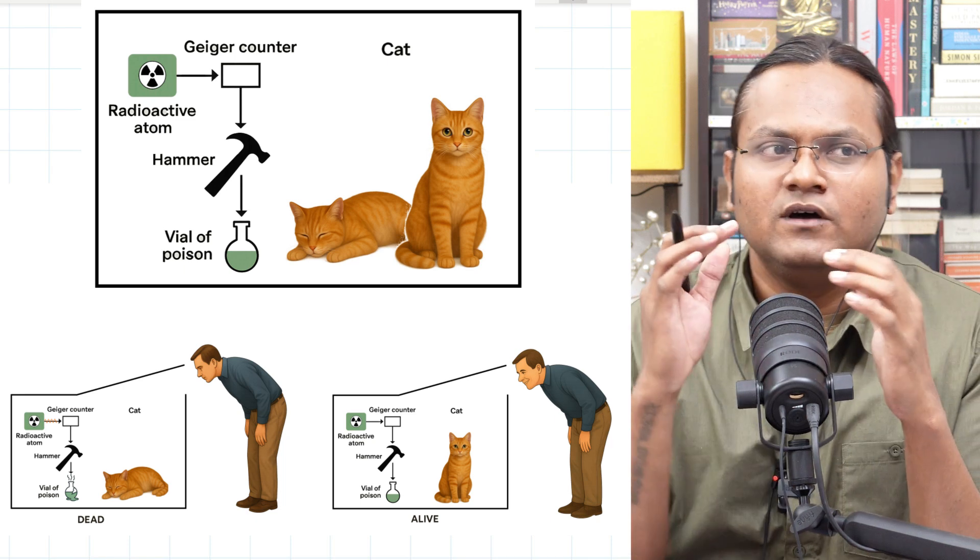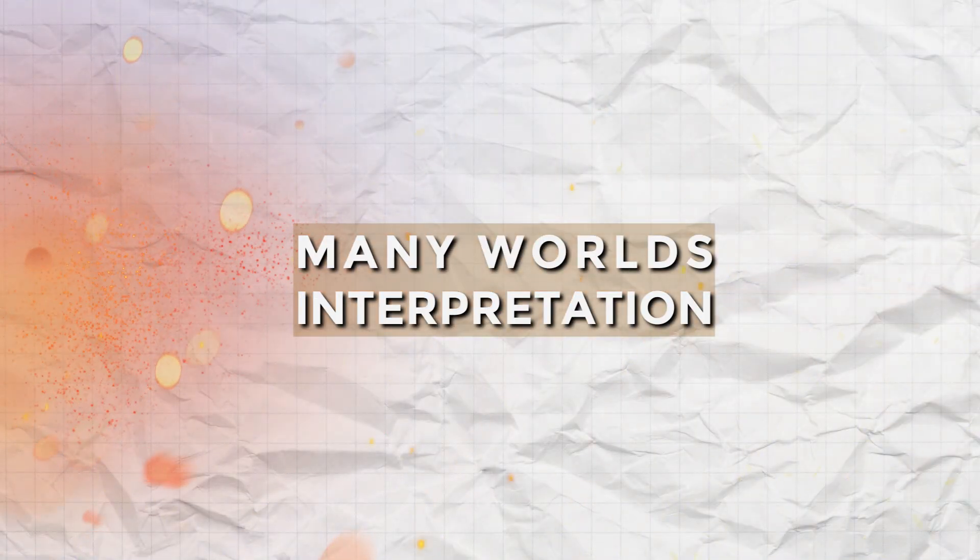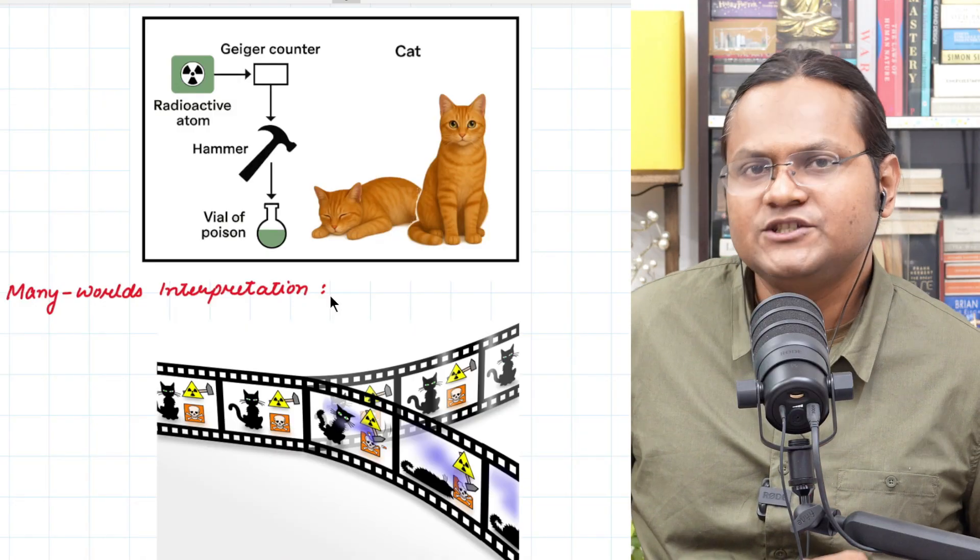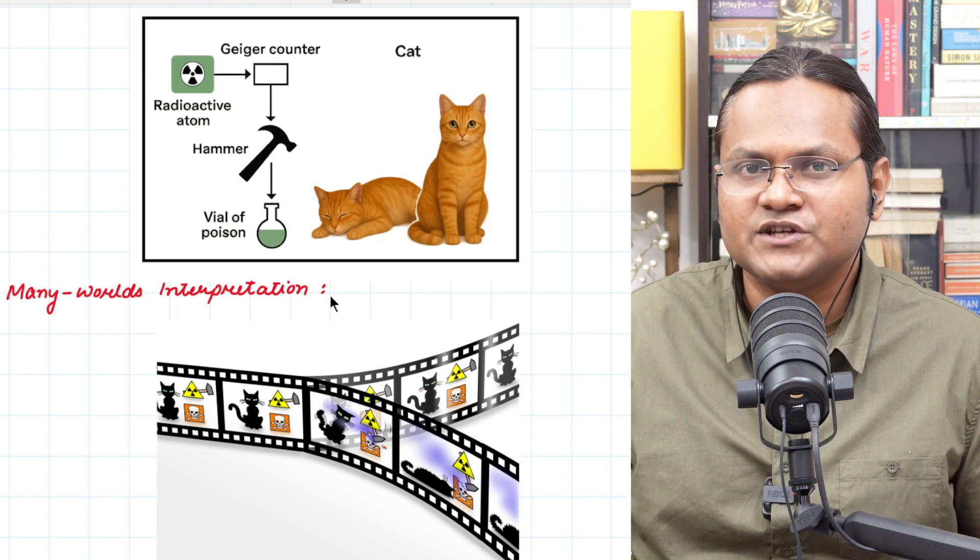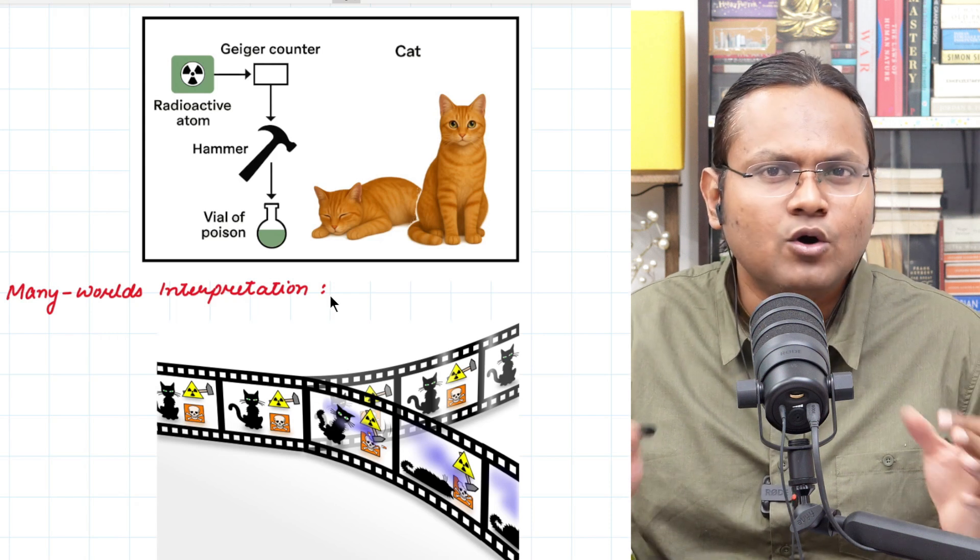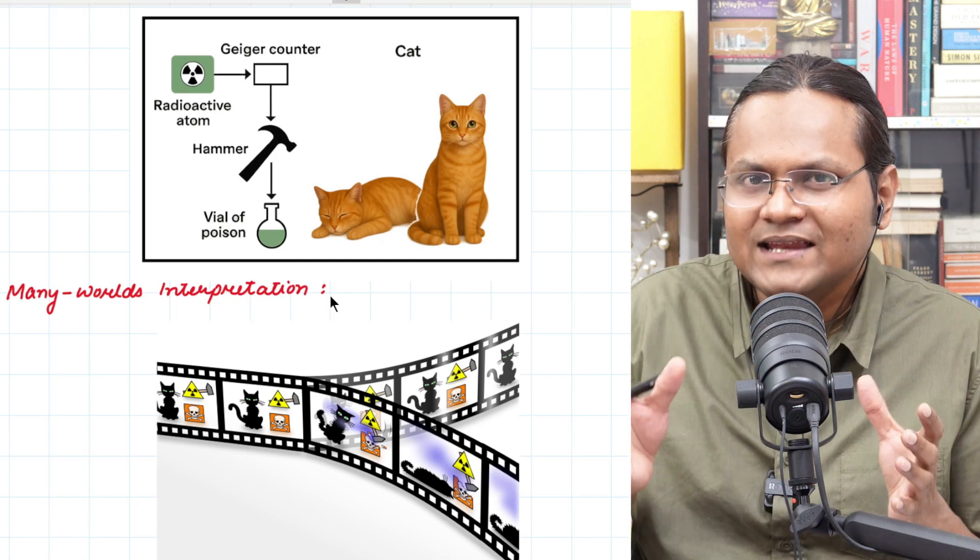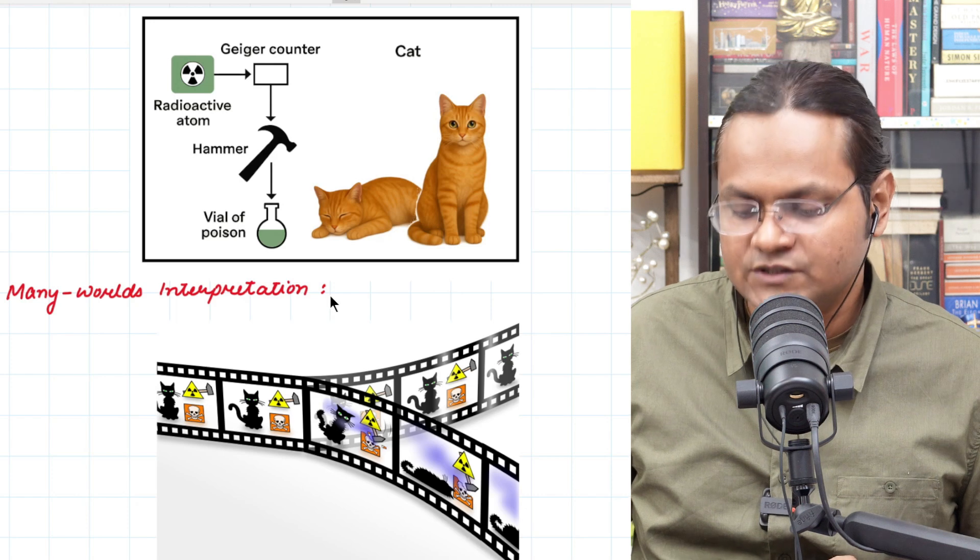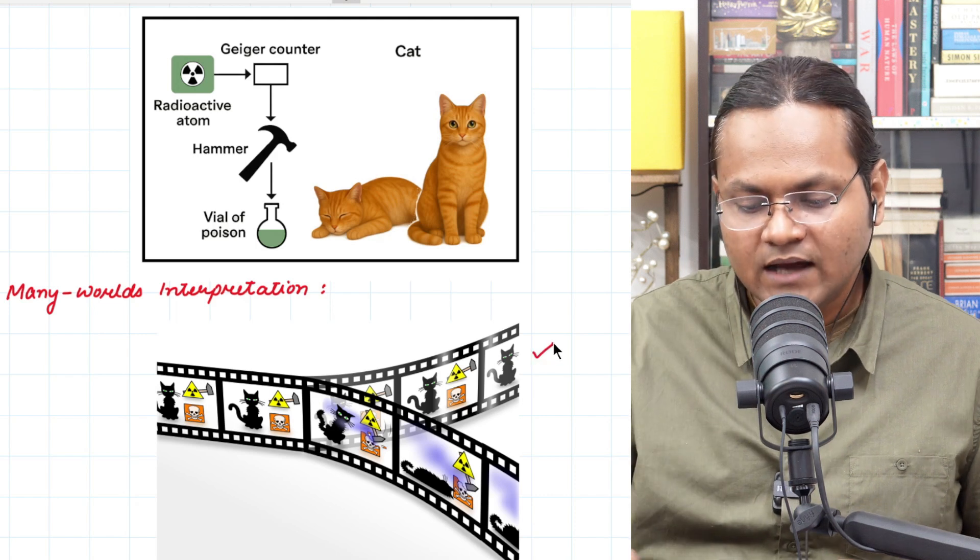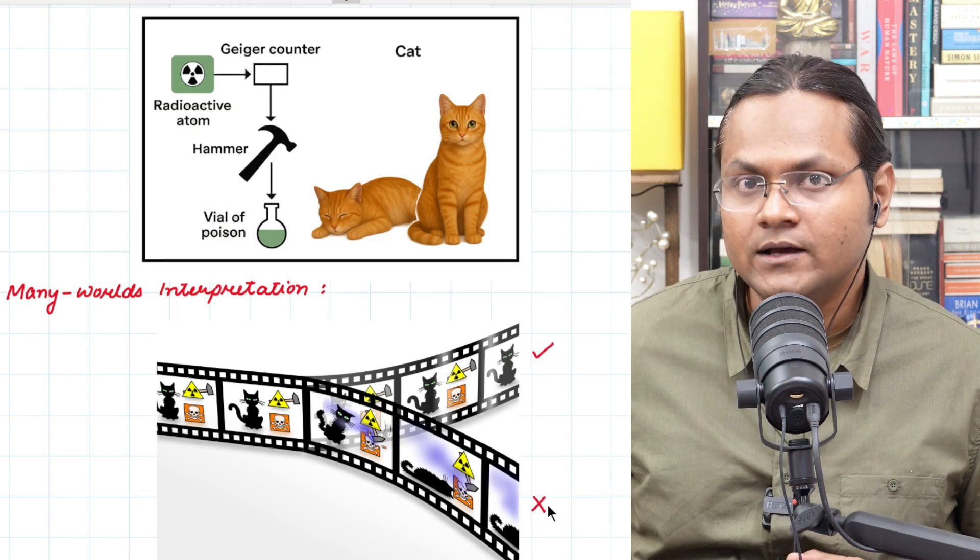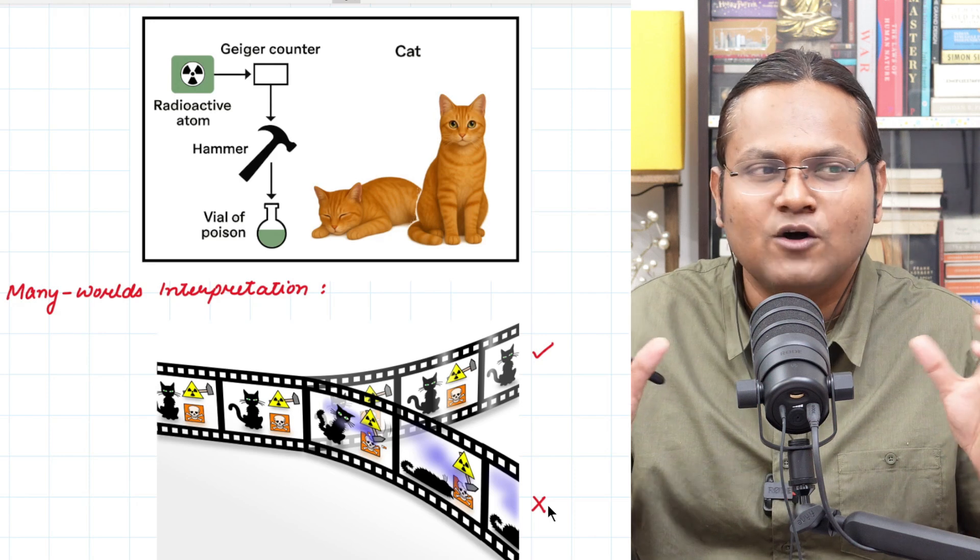One early explanation was that of the many worlds explanation. So in this interpretation, once you make a measurement, the wave function never really collapses. In fact, all possibilities of that particular wave function collapse is realized, but in alternate universes, in alternate non-communicable realities or worlds. Reality splits into all kinds of possibilities. So the moment an observer opens this box, one reality is when the cat is alive, and the other reality is when the cat is dead. Both these two realities are realized, but in separate non-communicable existences or worlds.